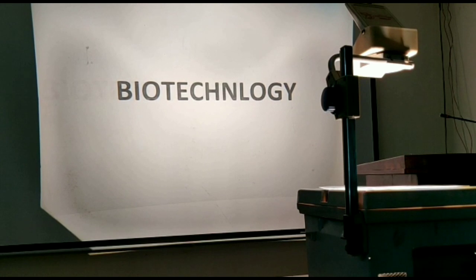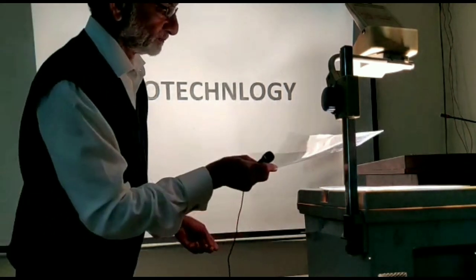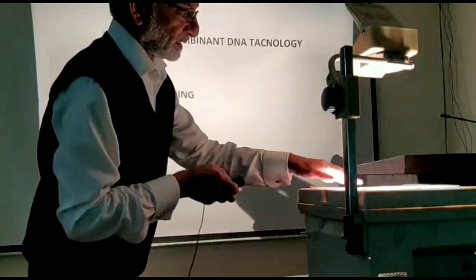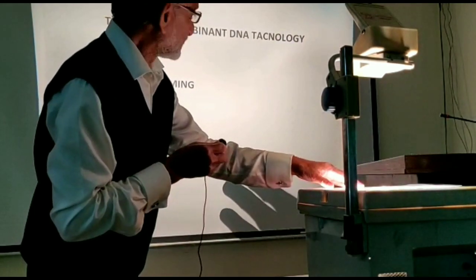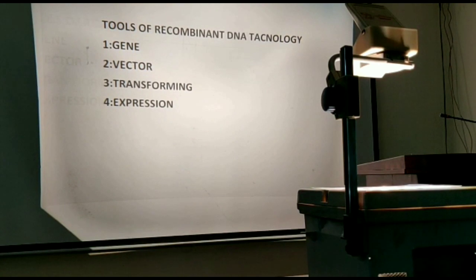We have got four basic tools, and these are as follows. Now look into it: tools of recombinant DNA technology. These are four major tools which are being utilized herein to identify it as genetic engineering. How we could engineeringly control it.